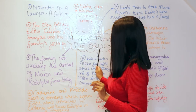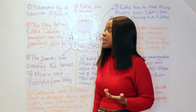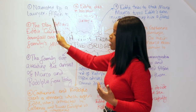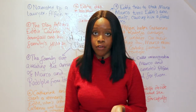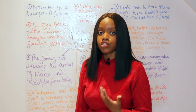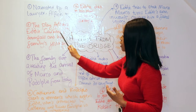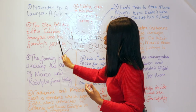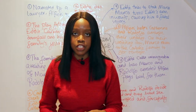This play is created by Arthur Miller and it's narrated from the perspective of a lawyer in the Italian-American community called Alfieri. Alfieri is the one who narrates the tragic downfall of Eddie Carbone.